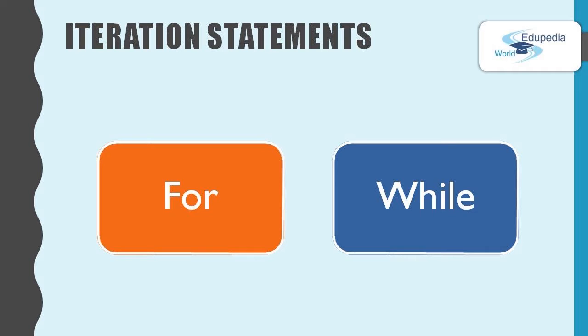In C++ there are two types of iteration statements. We commonly call it as loops. There are two types: for loops and while loops.